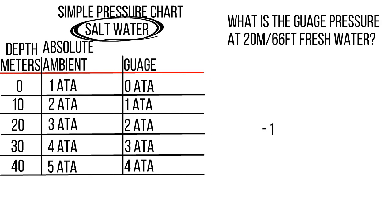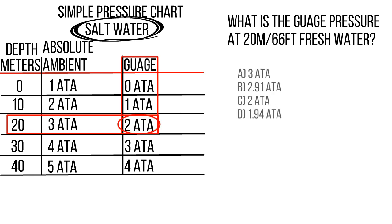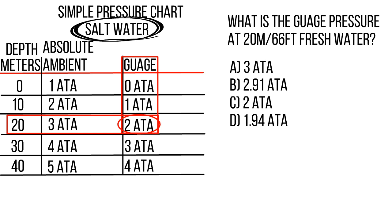Let's use the chart to answer a question: what is the gauge pressure at 20 metres, 66 feet, fresh water? We are at 20 metres and it's asking for gauge pressure. In saltwater the answer is 2 atmospheres. Now the key thing is the physics exam is multiple choice. We know 2 atmospheres is the saltwater answer; it's asking freshwater, so we just need to look for the answer that is a little bit less — 1.94.